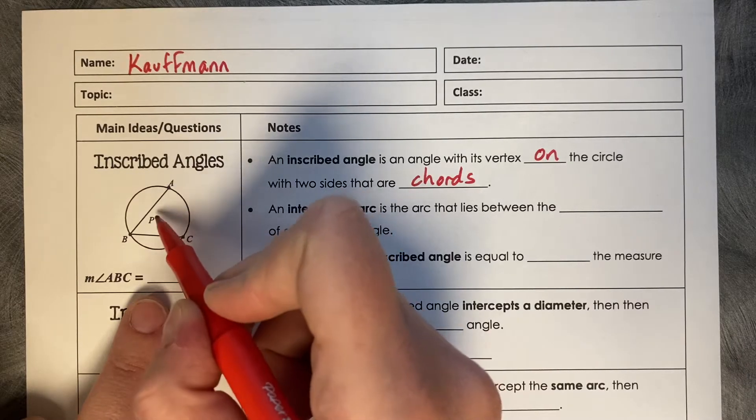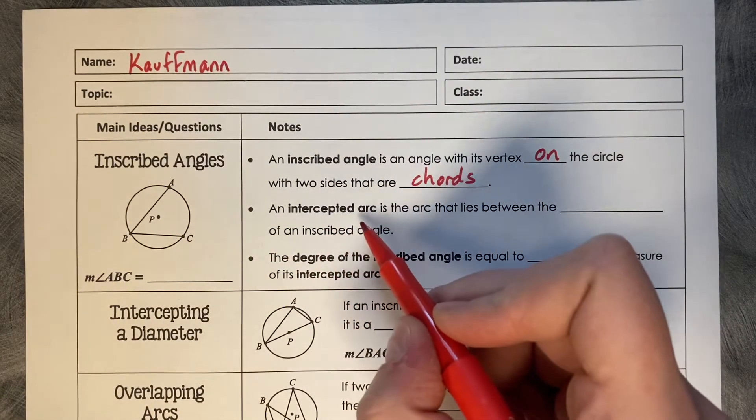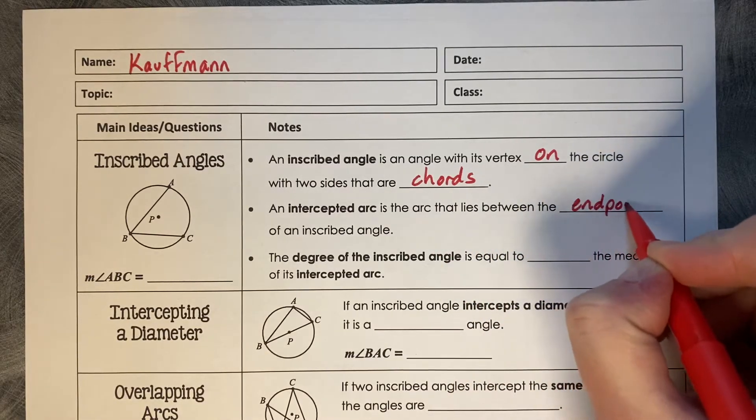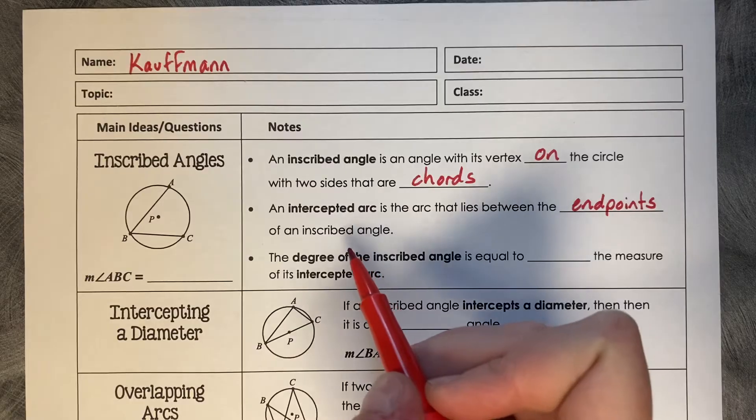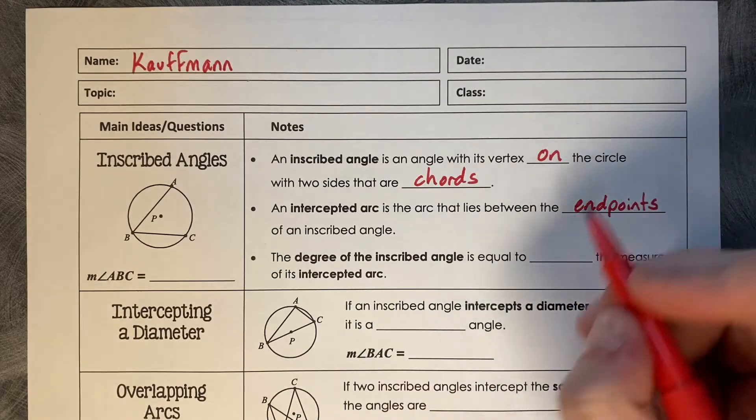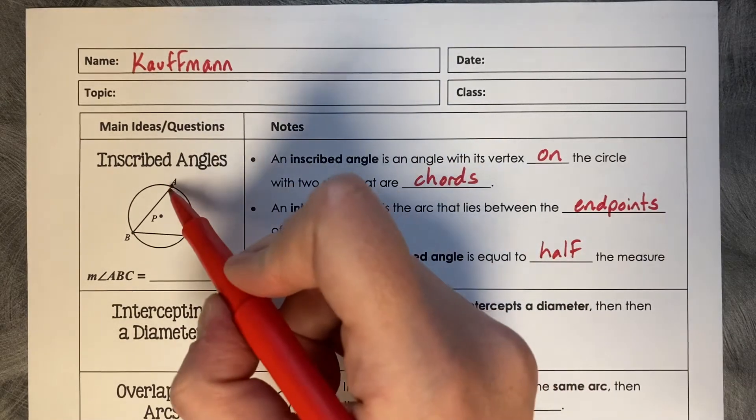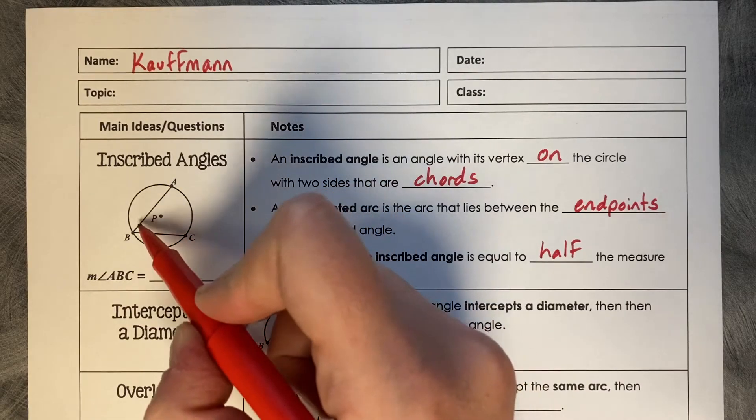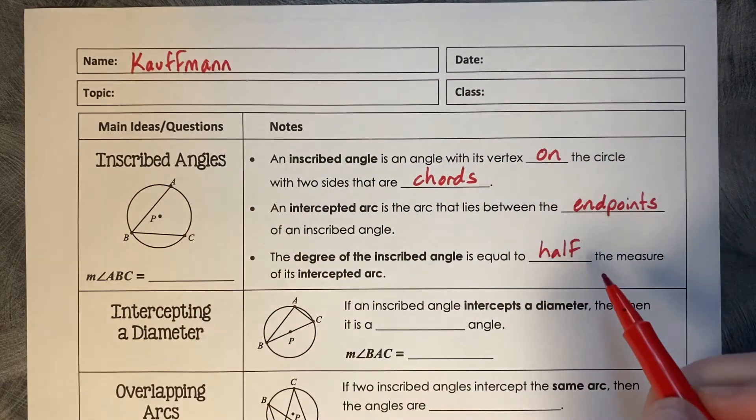So if I drew from P to A and P to C, that would be a central angle. An intercepted arc is the arc that lies between the endpoints of an inscribed angle. So the intercepted arc here would be AC. The degree of an inscribed angle is equal to half the measure of its intercepted arc. So for example, if the degree of this arc AC was 30 degrees, then the angle at B would be 15. So from the arc to the angle, you divide it by half.